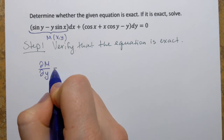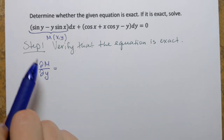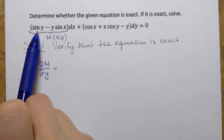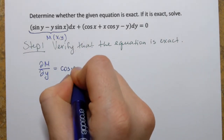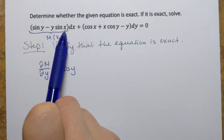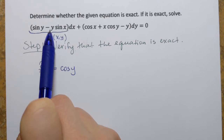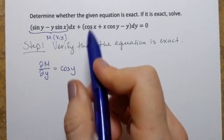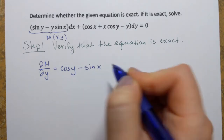I'm treating y as the variable and x as the constant. Since y is the variable, the derivative of sine of y is cosine of y. Next, y sine of x: y is the variable and sine of x is the constant, so the derivative of y with a constant just drops y and leaves the coefficient, giving minus sine of x.